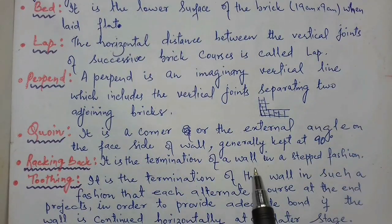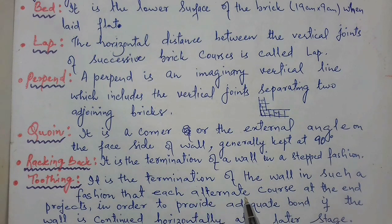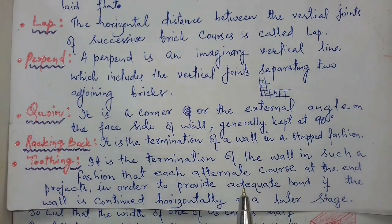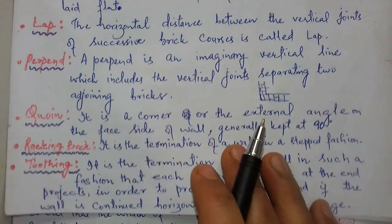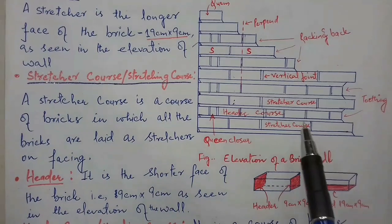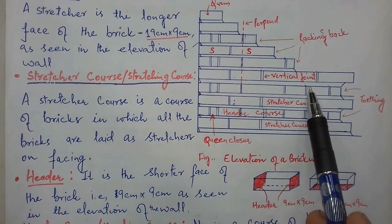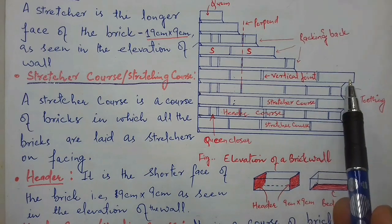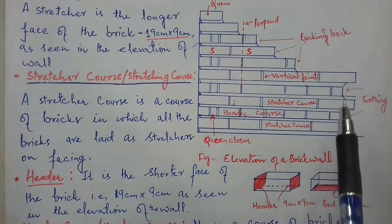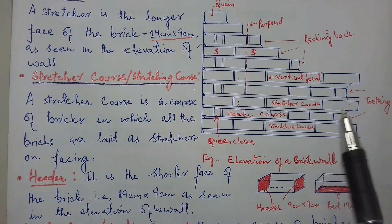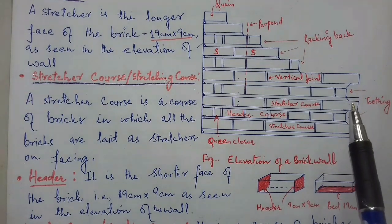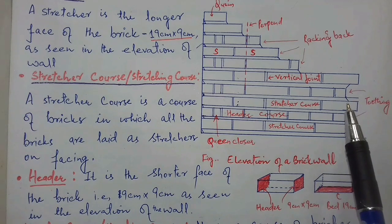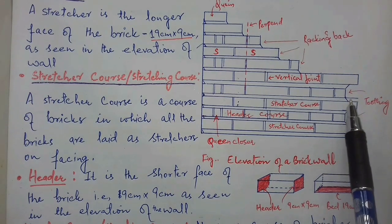Toothing: it is the termination of a wall in such a fashion that each alternate course at the end projects, in order to provide an adequate bond if the wall is continued horizontally at a later stage. Each alternate layer projects outward to provide an adequate bond if the wall is continued horizontally at a later stage.